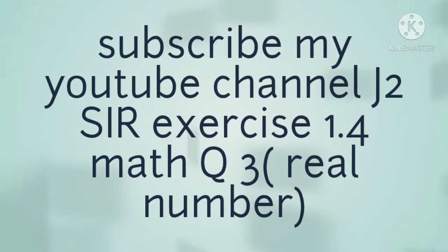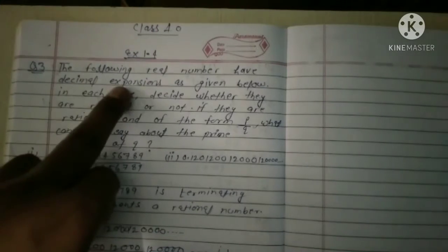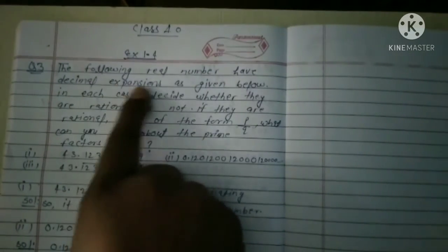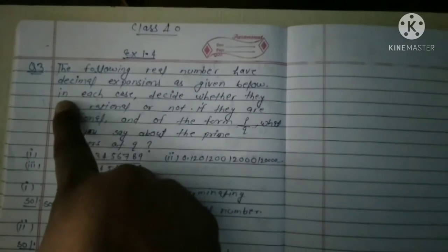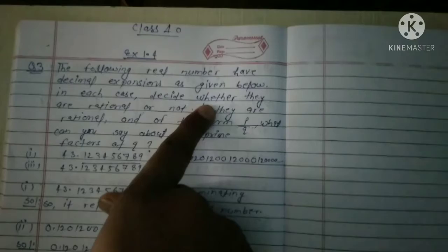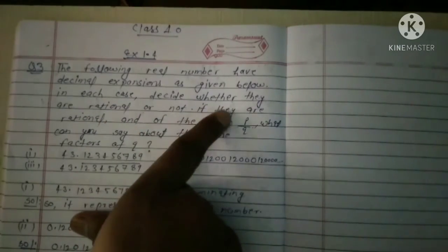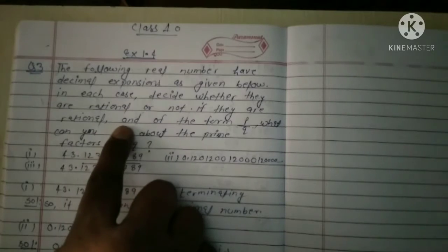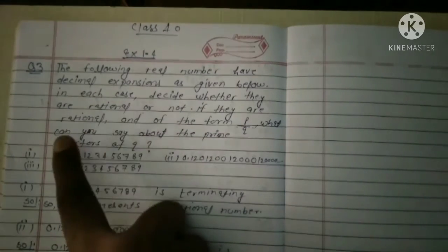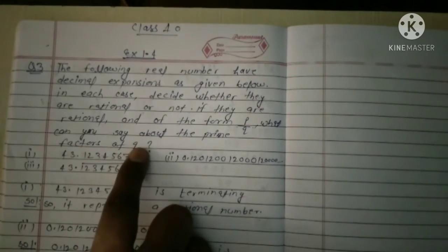Exercise 1.4, question number 3. The question is: the following real numbers have decimal expansions as given below. In each case, decide whether they are rational or not. If they are rational and of the form P by Q, what can you say about the prime factors of Q?